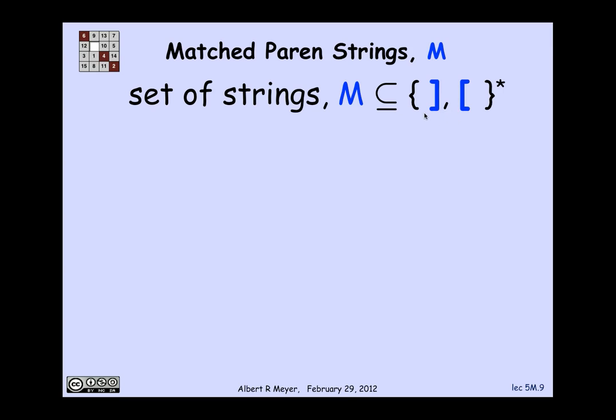Writing parentheses on this slide turns out to be confusing with parentheses that are actually used to delimit things. So I'm going to replace parentheses by brackets in blue, a right bracket and a left bracket. These are the finite strings of right and left brackets, and I want to give a recursive definition of a set M which will be precisely those strings where the left and right brackets match up appropriately.